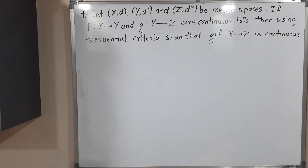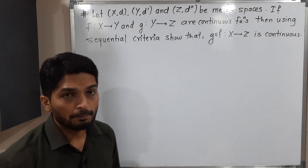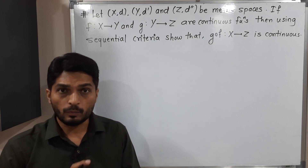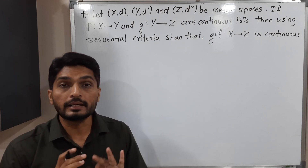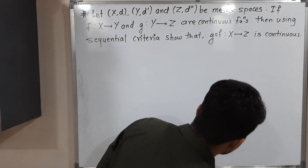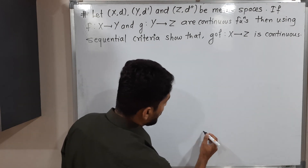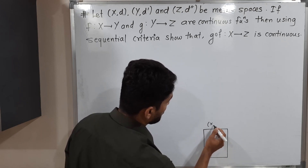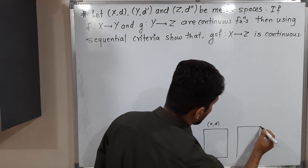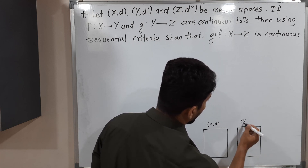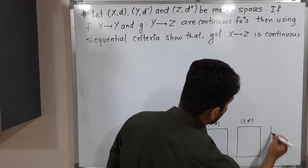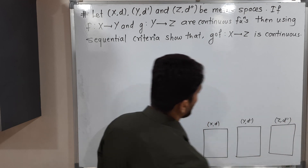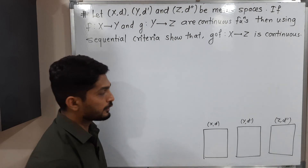In this video we are going to discuss this example. We have three metric spaces: X with metric D, Y with metric D-dash, and Z with metric D-double-dash. Let me draw the diagram so we can easily understand.